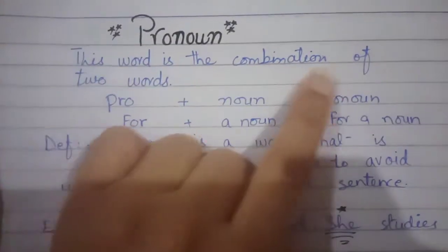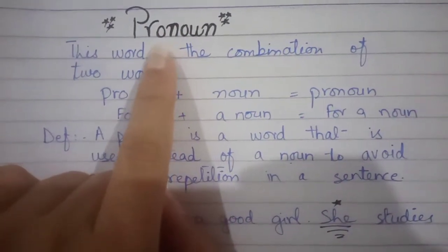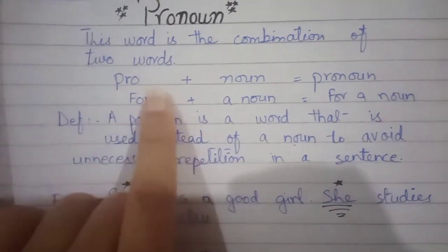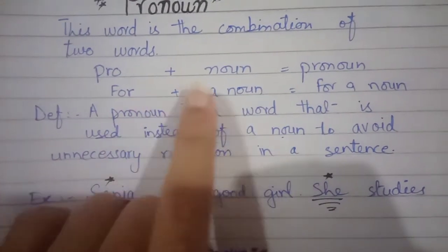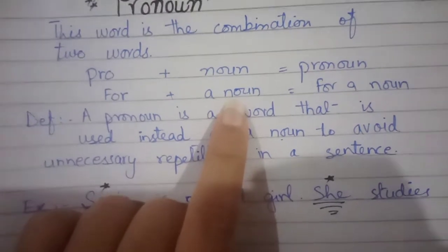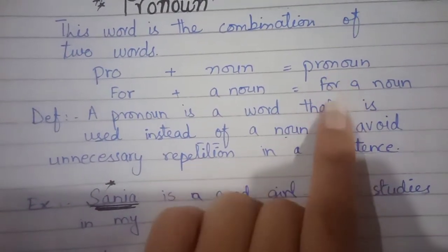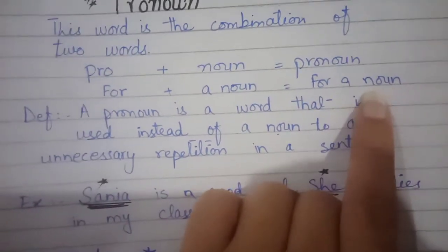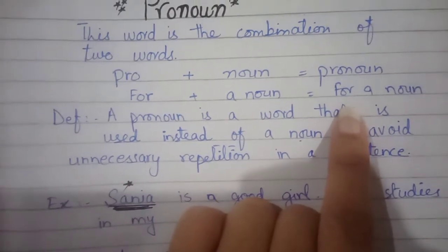This word is the combination of two words. Pronoun is actually created by two words. The first word is 'pro' and the second word is 'noun'. Pro means in English 'for', and noun means the name of a person, place, or thing. So when we combine pro with noun, we are talking about a noun, and for noun we use some different words.